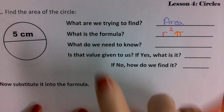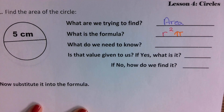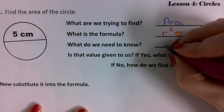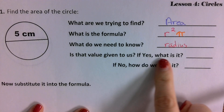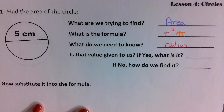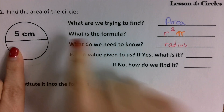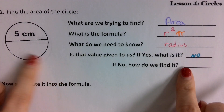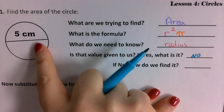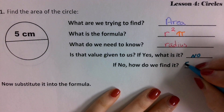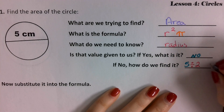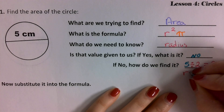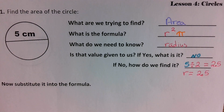So what do we need to know? Do we need radius or diameter? We need to know what the radius is. Based off of the problem, do they tell us the radius? No. What did they tell us? The diameter. So how do we find the radius — how do we turn diameter into radius? We divide it by 2. So what's 5 divided by 2? 2.5. So the radius is going to be equal to 2.5.